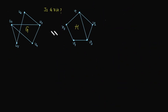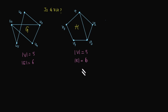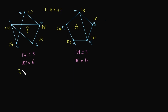Now let's prove whether this graph G is isomorphic to H. The total number of vertices in graph G is five, and in graph H is also five. The total number of edges in graph G is six, and in graph H is also six. After calculating the degree of each vertex, the degree sequence has two vertices of highest degree three, and the rest of degree two — this is the same for both G and H. Since the number of vertices, edges, and degree sequence are the same, they may be isomorphic.